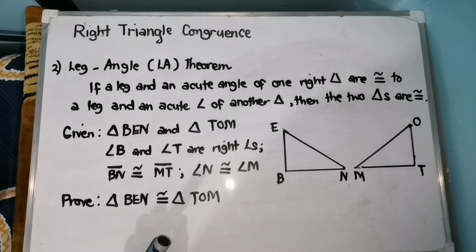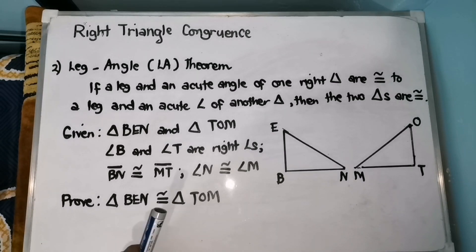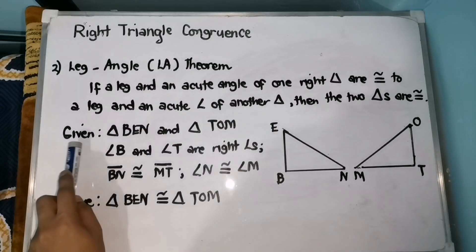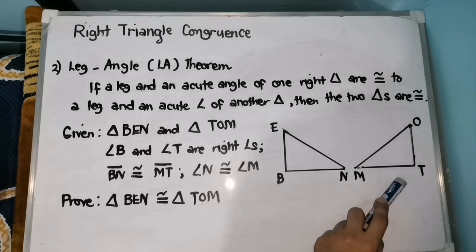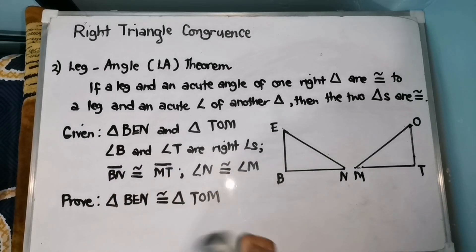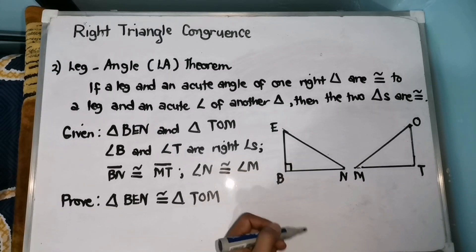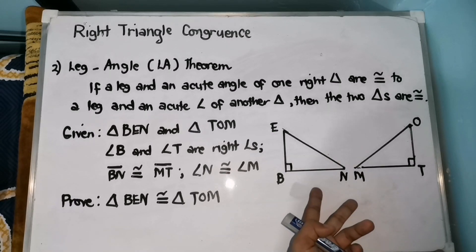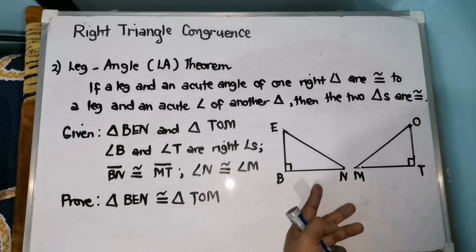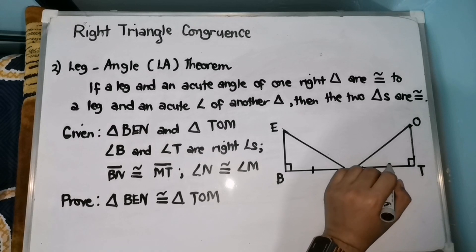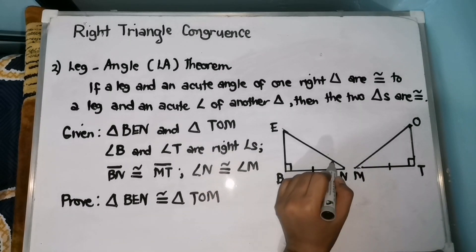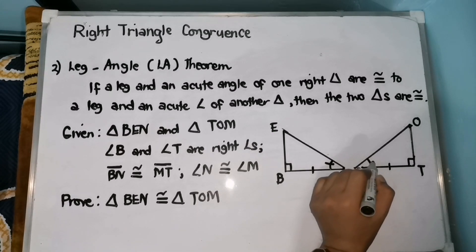For this example, we will inspect the figure to conclude whether it is congruent using the LA theorem. Our given triangles are triangle BNO and triangle TOM. Another given is that angle B and angle T are right angles, so the two triangles are right triangles. Also, segment BN is congruent with segment MT, and angle N is congruent with angle M.